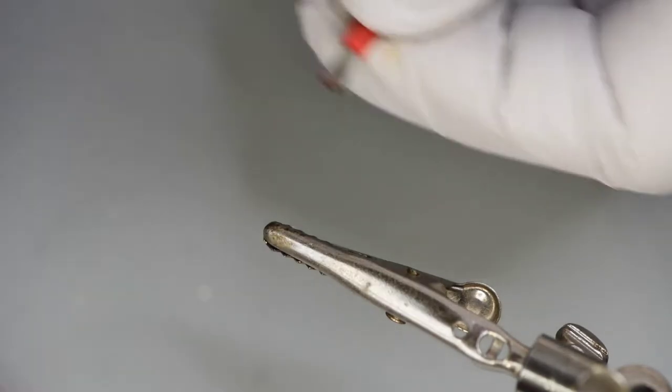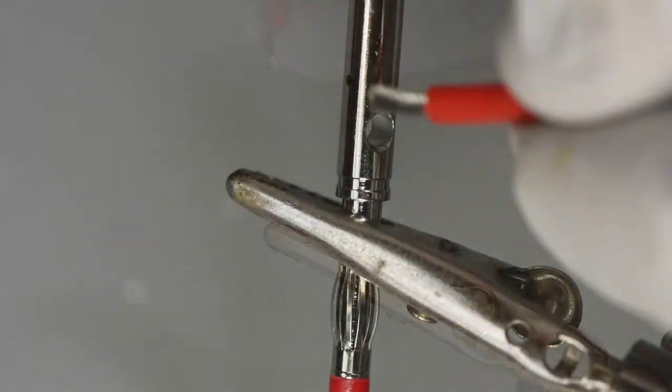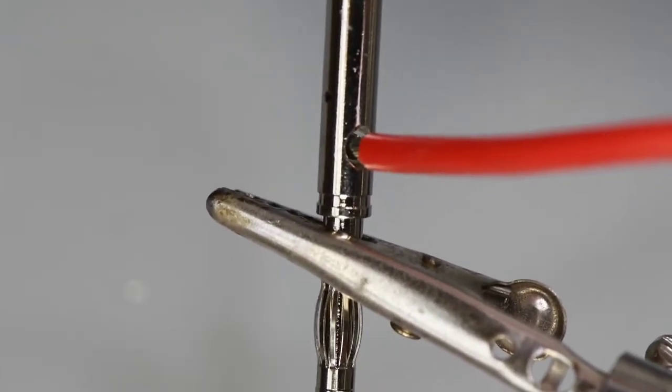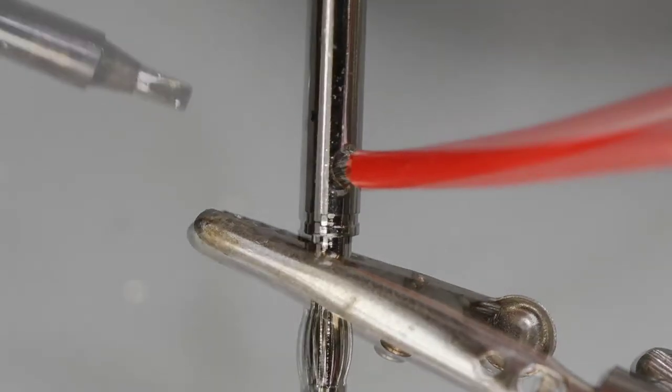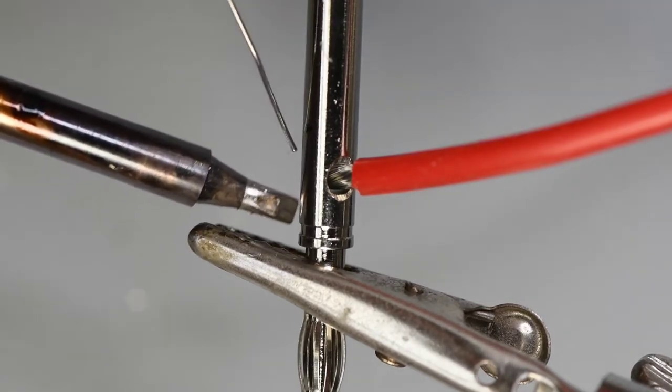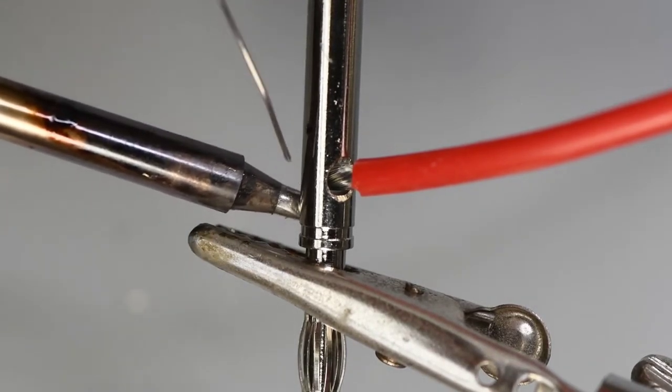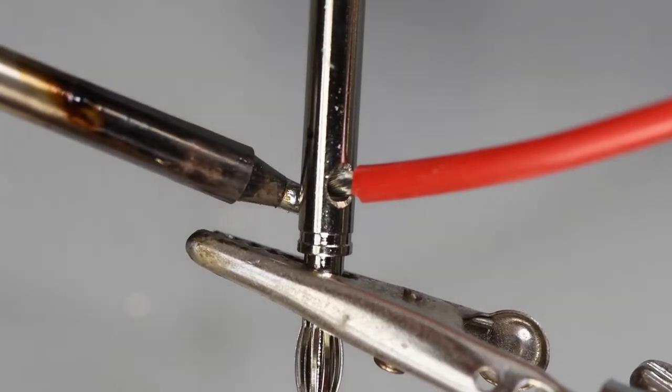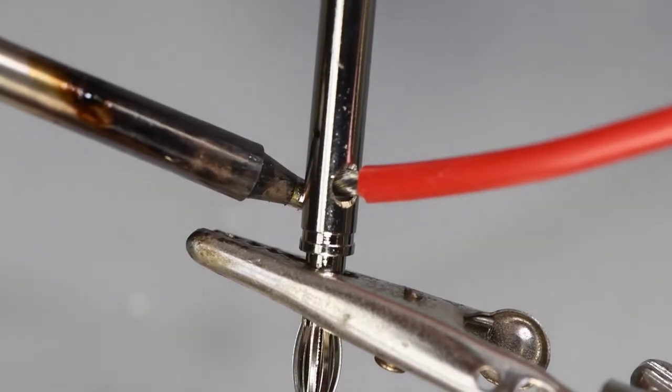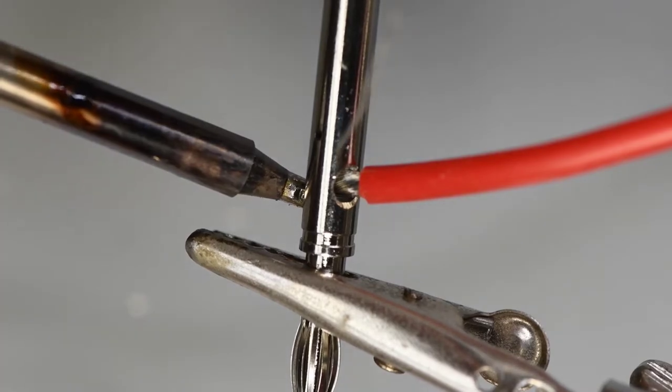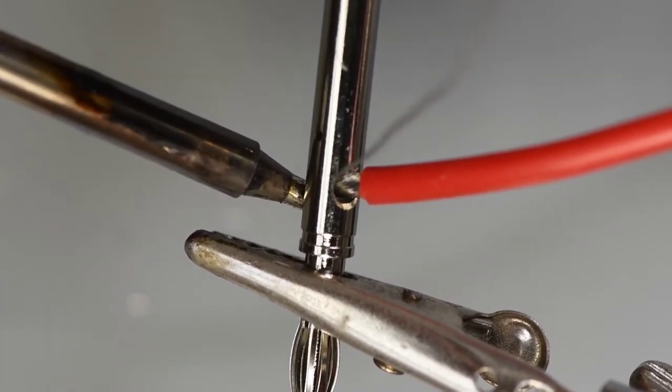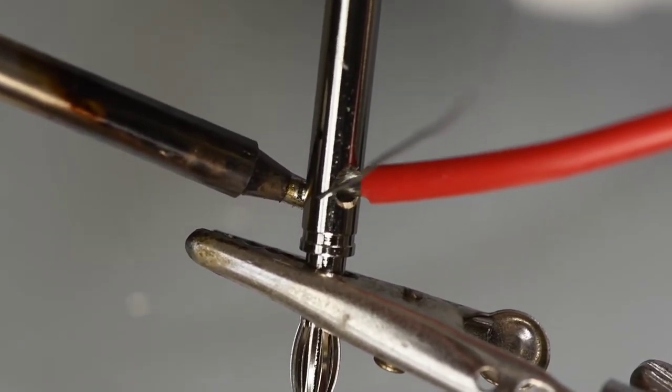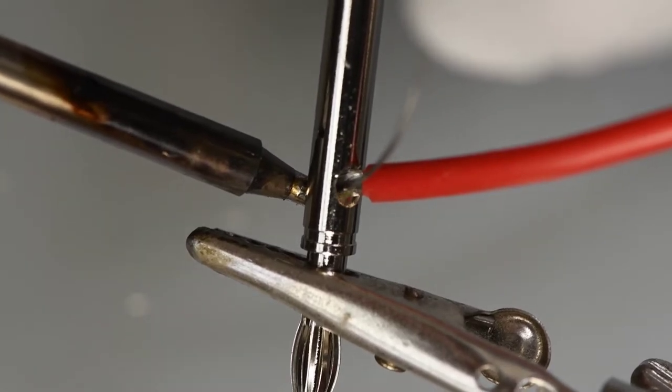I'm removing a bit over a quarter inch of insulation off the wire. Then running the wire through the eyelet. It's about flush with the flat on the back of the plug. I have the soldering iron set to 720 degrees. Once the metal is hot, I'll feed a bit of solder into the eyelet.